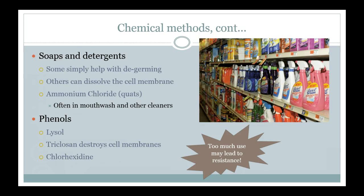Phenols — you've probably heard of Lysol — are used in many products. Triclosan is a newer phenol used in antibacterial soaps. The problem with overusing these is that if we kill off the weaker species but not the more resistant ones, we may have more trouble. We don't want to overdo it — do what's necessary to remain healthy, but it's also okay to be exposed to some things to increase immunity.